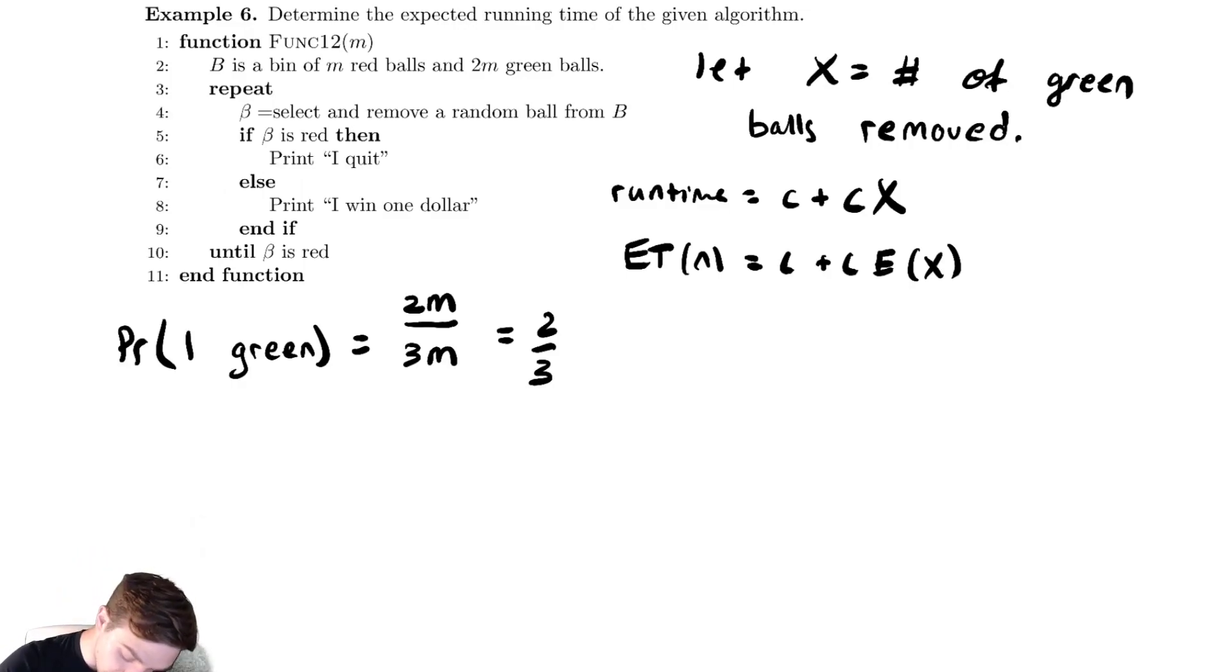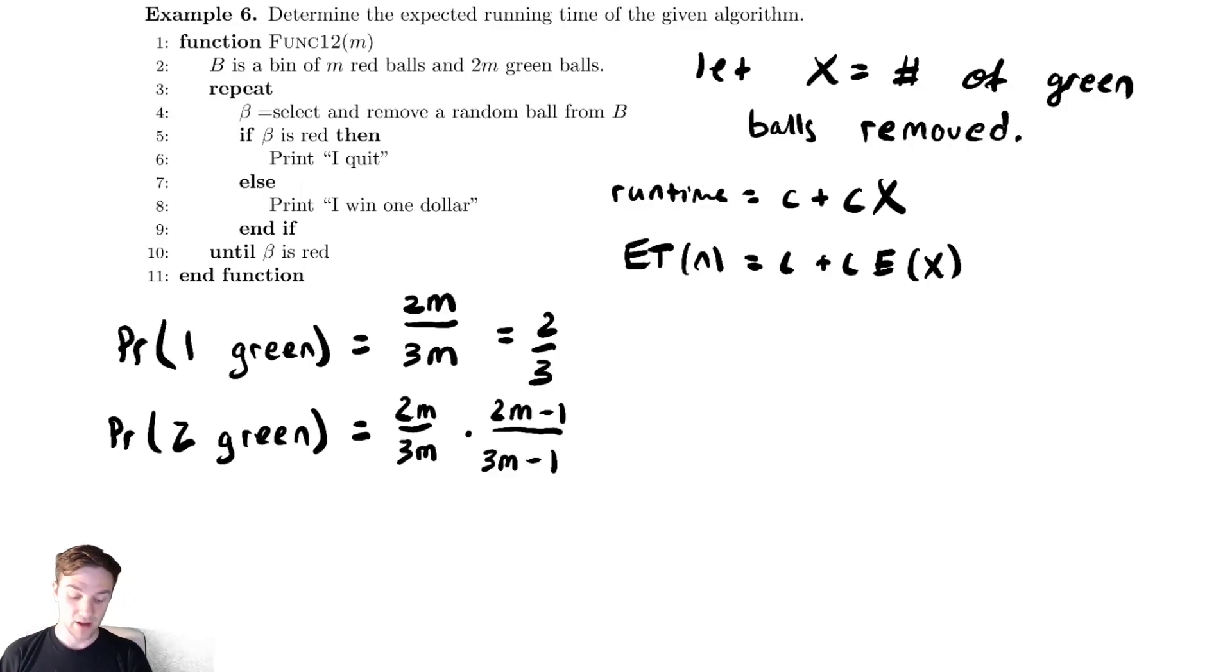Now, what is the probability of two green? Well, in order to get two green, the first one had to be green, so we have that 2m over 3m times, we need to do it again, but because we are removing these objects, we are not multiplying by the same thing. After I've removed one green ball, I have 2m minus 1 green balls left, and I have also removed one of the total balls from the bin, so this is 3m minus 1 total options.